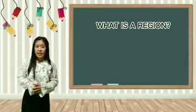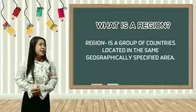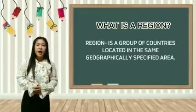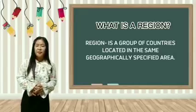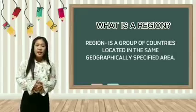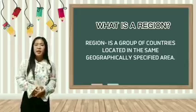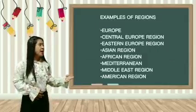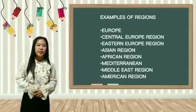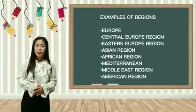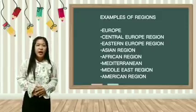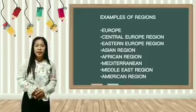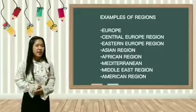We are going to define what a region is. A region is a group of countries located in the same geographically specified area. Regions are areas broadly divided by physical characteristics, human impact characteristics, and the interaction of humanity and the environment. Examples of regions include Europe, Central and Eastern Europe, the Asian region, African region, Mediterranean, the Middle East, and America. These regions are all made up of nations and countries.